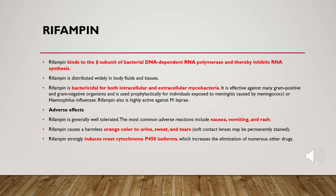Another important antibiotic used in the treatment of tuberculosis is rifampicin. Rifampicin inhibits RNA synthesis, resulting in no cell growth and cell death. A key advantage is that it is widely distributed in body fluids and tissues, so it can access any tissue or organ.